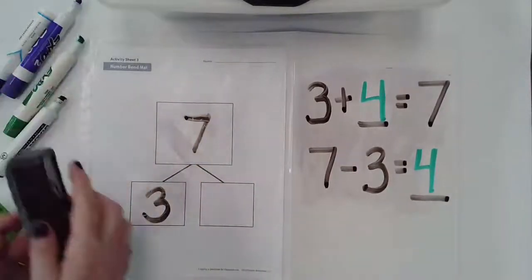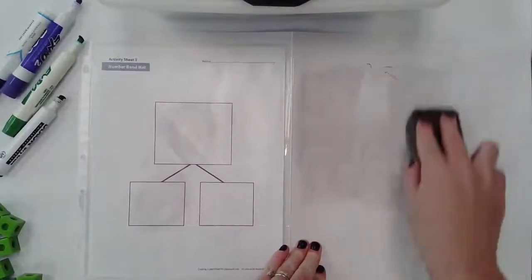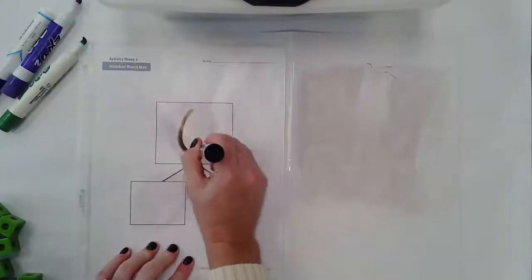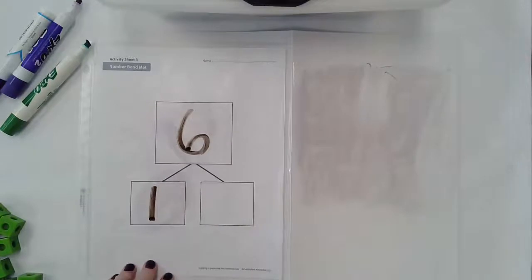Let's try with another problem. This time we're going to use different addends and different totals. So this time my total is six and I have an addend of one. What could this other one be?